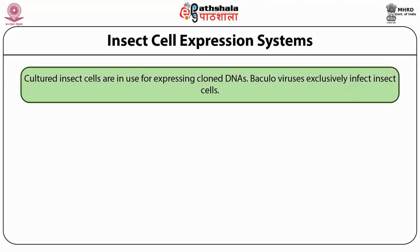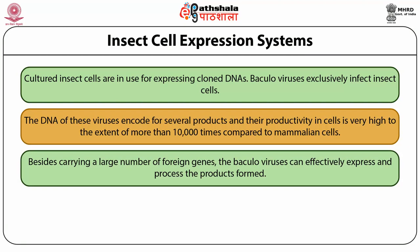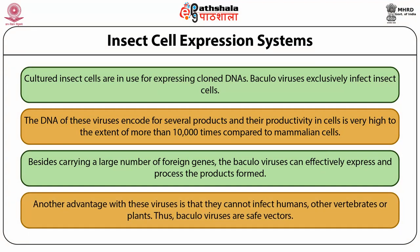Insect cell expression systems: cultured insect cells are in use for expressing cloned DNAs. Baculovirus exclusively infects insect cells. The DNA of these viruses encodes for several products and their productivity in cells is very high — more than 10,000 times compared to mammalian cells. Besides carrying a large number of foreign genes, baculovirus can effectively express and process the products formed. These viruses cannot infect humans, other vertebrates, or plants, making baculoviruses a safe vector.